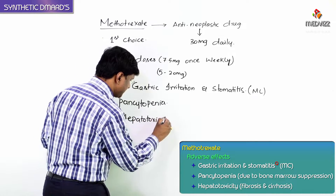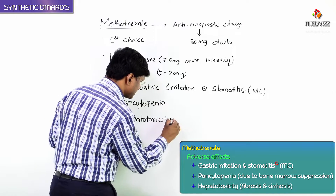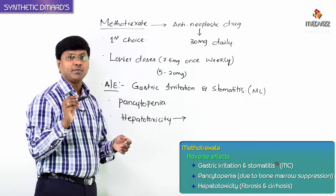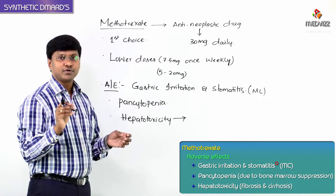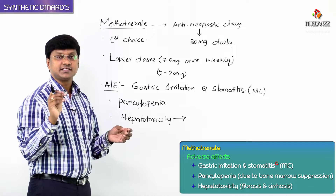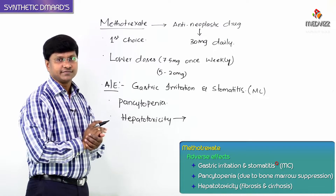Another important adverse effect of methotrexate is hepatotoxicity, which manifests in the form of fibrosis of the liver as well as cirrhosis of the liver.